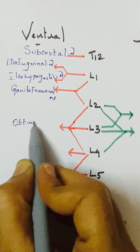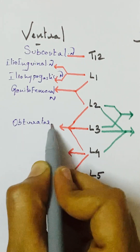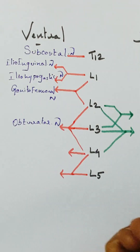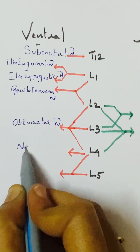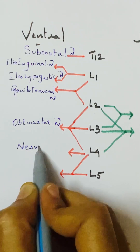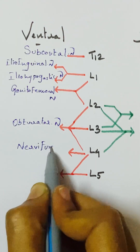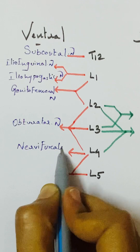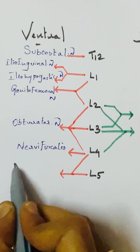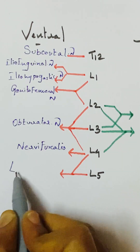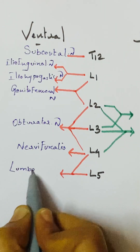The ventral division of L2, L3, L4 forms the obturator nerve. From L4 alone there is a nerve called the nerve to femoral canal, and L4 and L5 join to form the lumbosacral trunk.